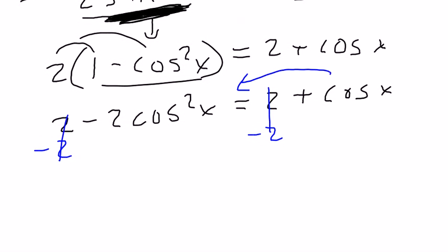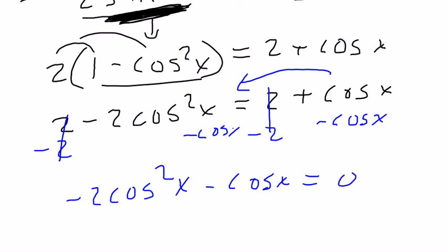Get everything onto the same side. So it would be negative 2 cosine squared x plus... wait, that would be minus, because I would subtract it from both sides. Alright, minus cosine of x. So it would be minus cosine of x. This is equal to 0.